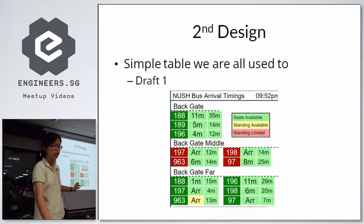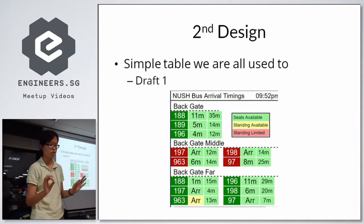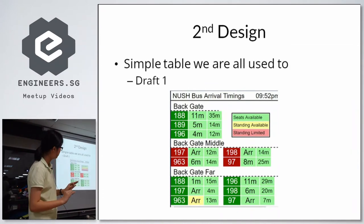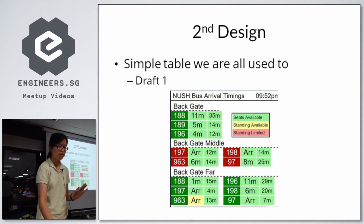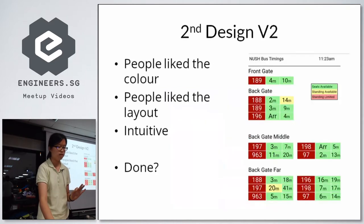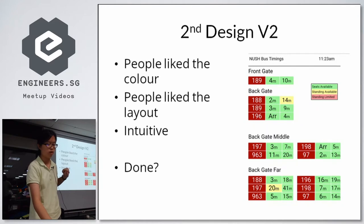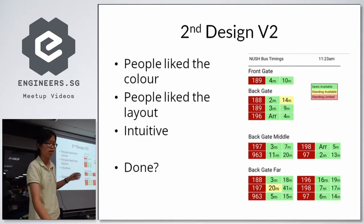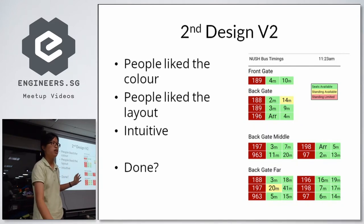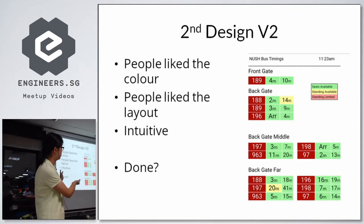So I dropped one in PowerPoint. This is a simple table design that we are all used to, which I think is slightly readable. And then the second version was written in code. This is how it looks in Chrome. I showed this to some of my friends and they said they liked the color, liked the layout, and it was pretty intuitive to them — though I'm not sure if it's intuitive to all of you.